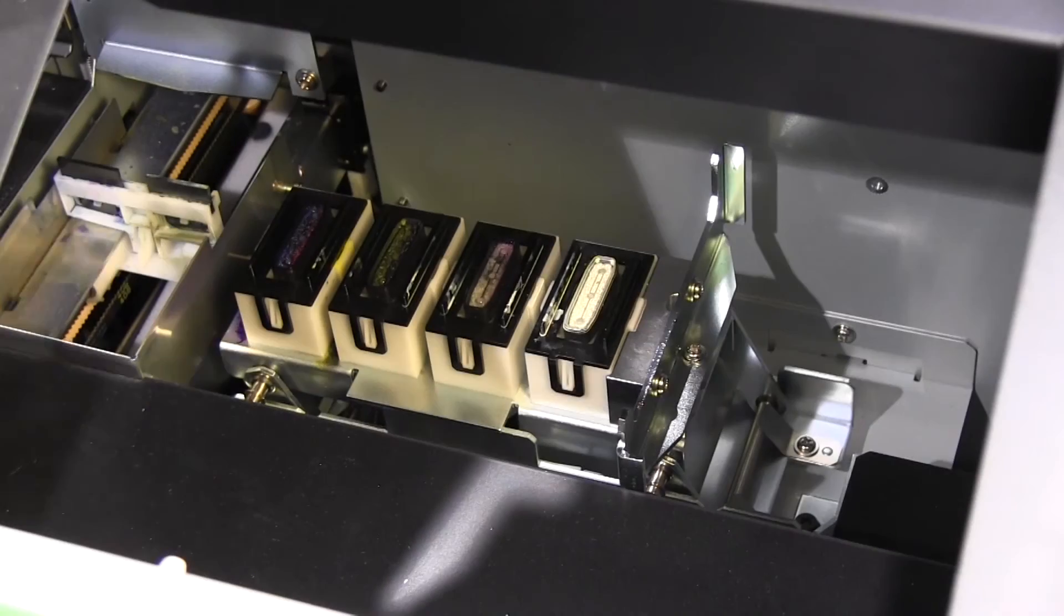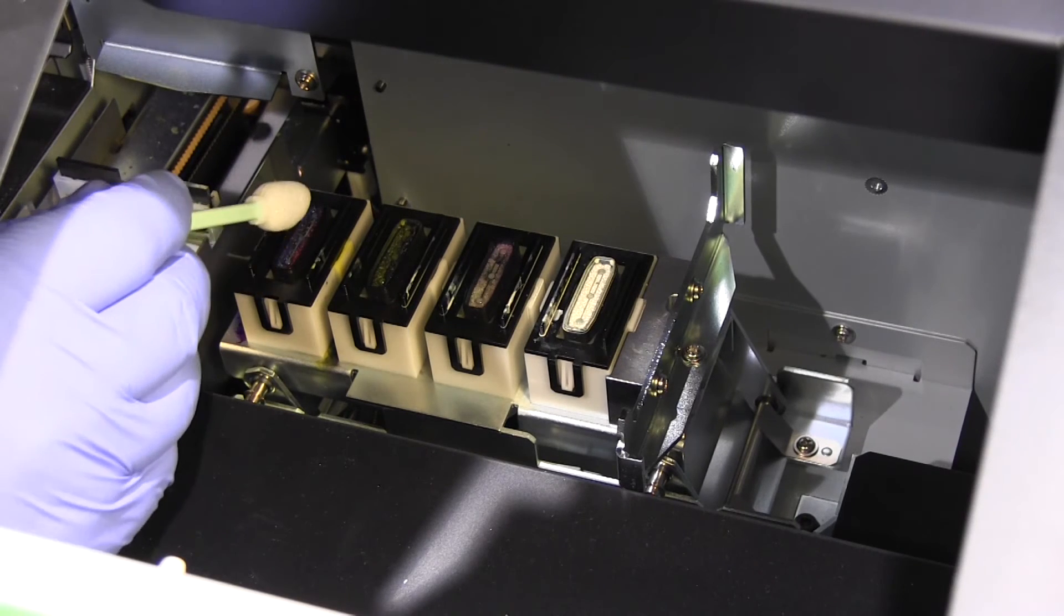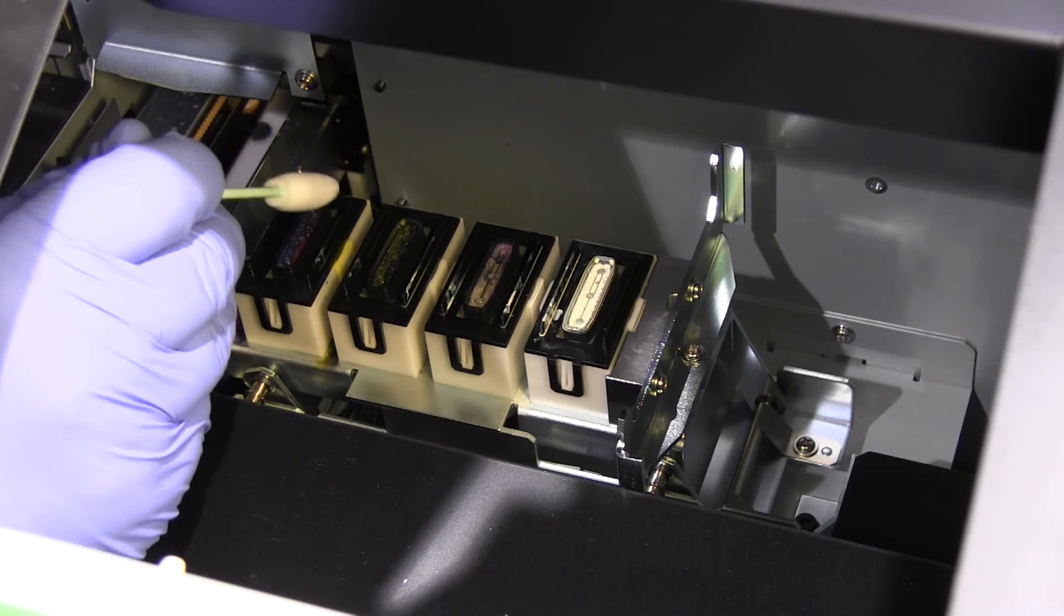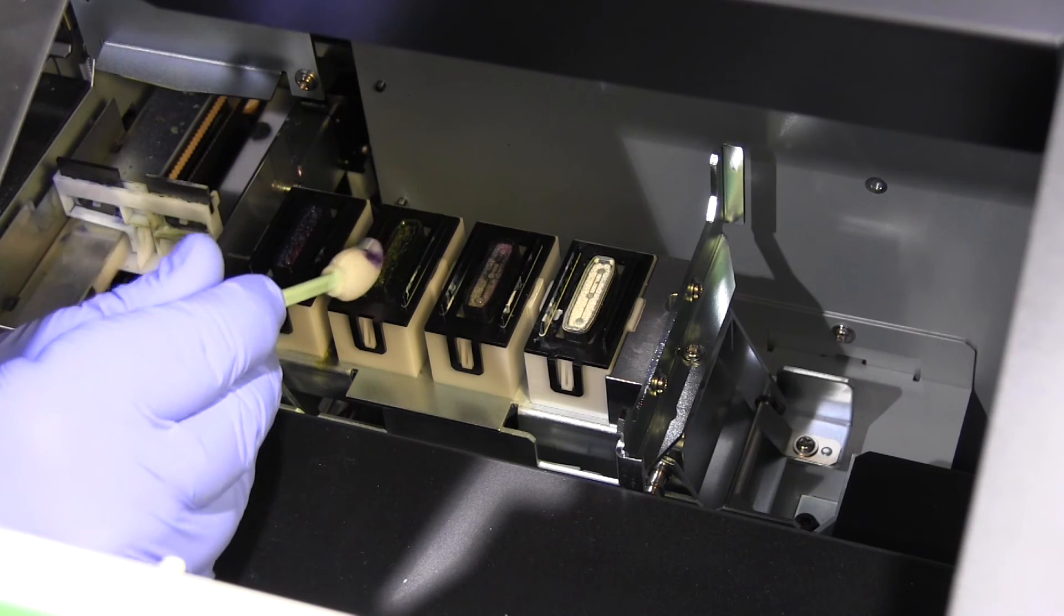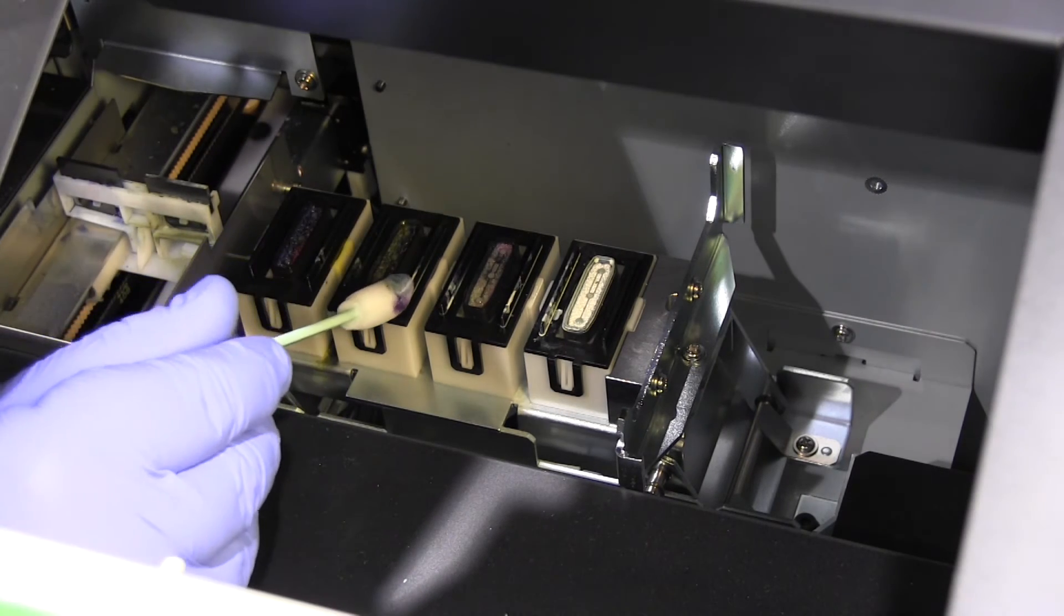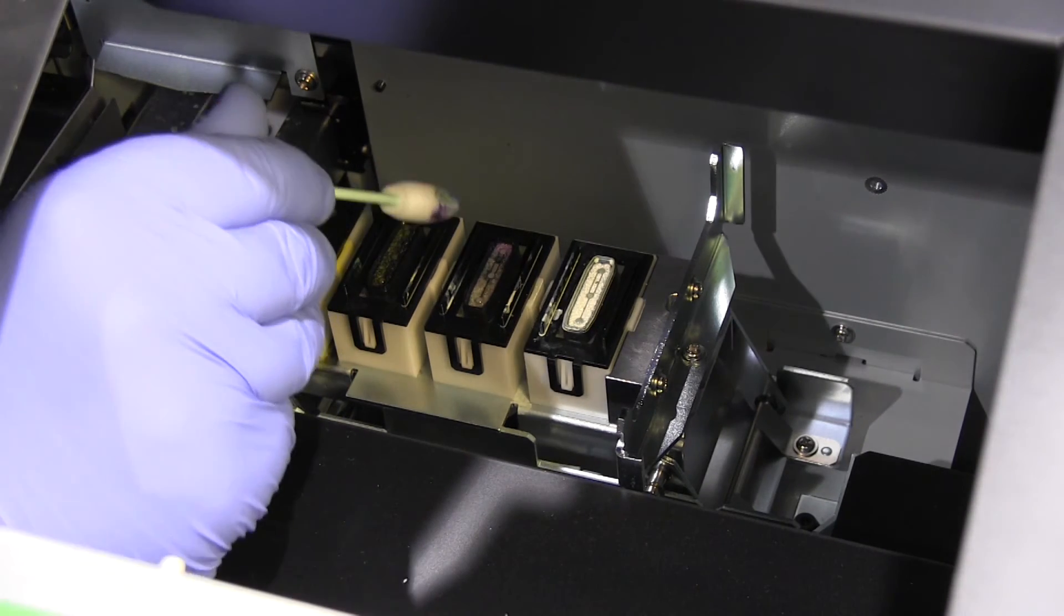Next we move on to the cap tops. The cap top makes an airtight seal on the underside of the printhead when it is not in use. You will need to clean around the gasket to ensure that the seal is clean and working properly. Clean the plastic surround and the rubber seal.